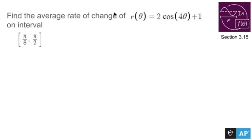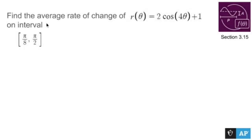Find the average rate of change of the polar equation r of theta equals 2 cos 4 theta plus 1, on the interval pi over 8 to pi over 2.